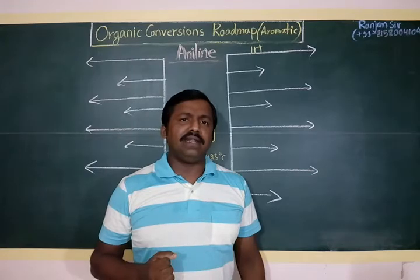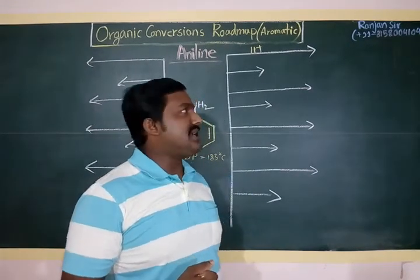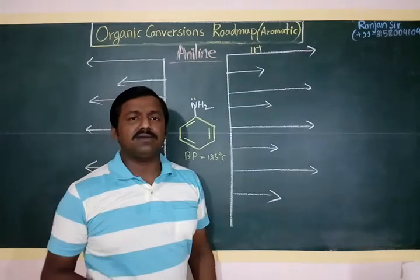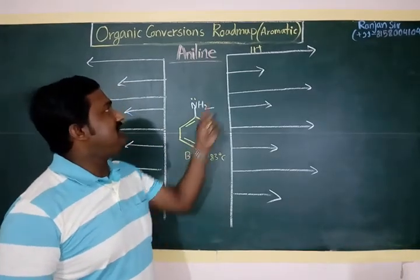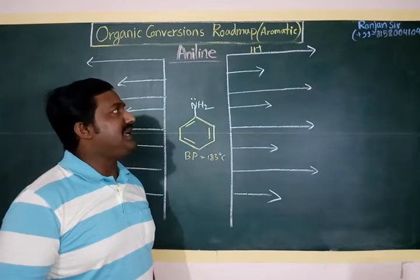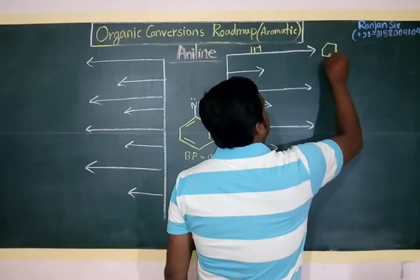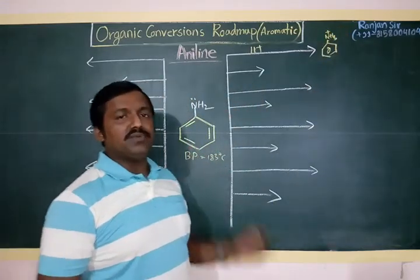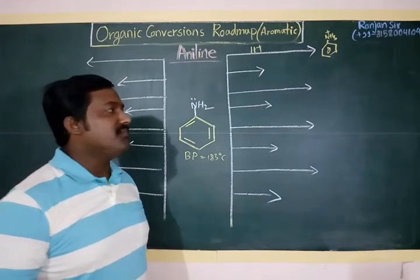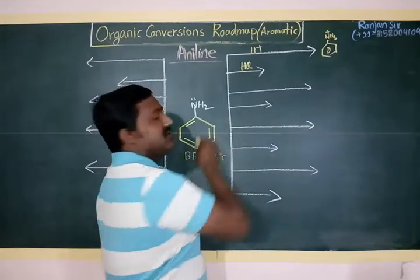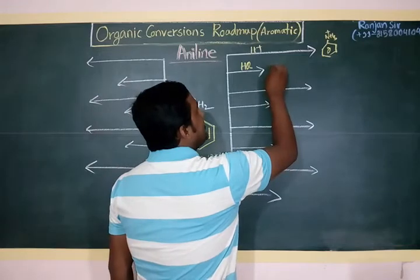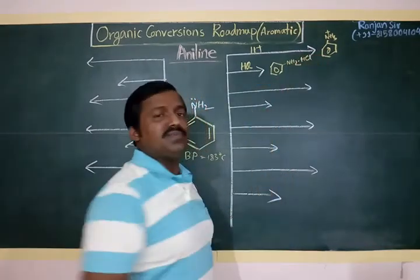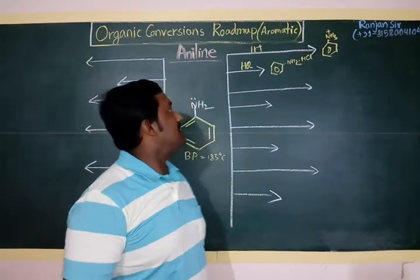Aniline is basic in nature, so aniline instantly reacts with H+. Aniline has lone pairs over the nitrogen atom, and that is why aniline instantly combines with H+ to form the anilinium ion. Aniline, though it is liquid, is generally stored in solid form by mixing with HCl, forming aniline hydrochloride — NH2·HCl. This can also exist as anilinium hydrochloride.